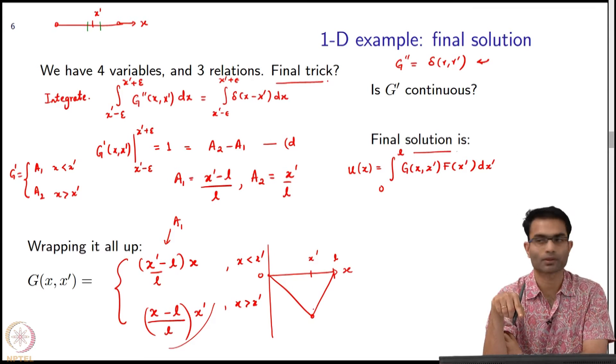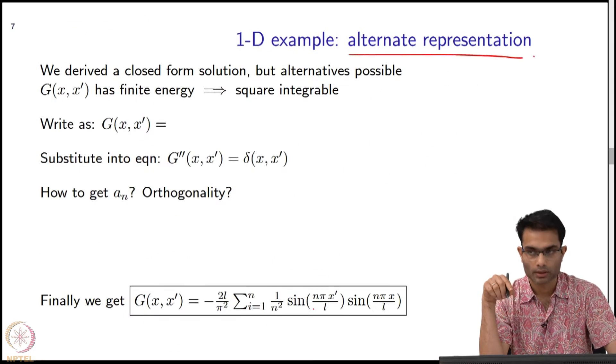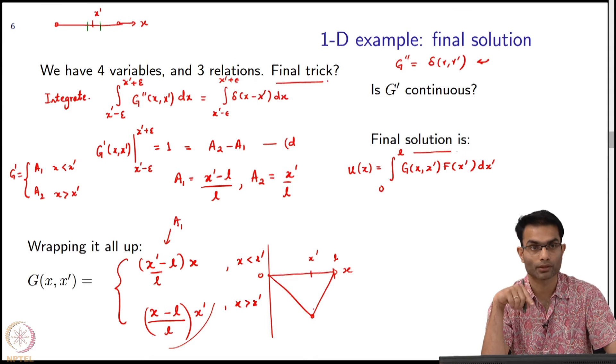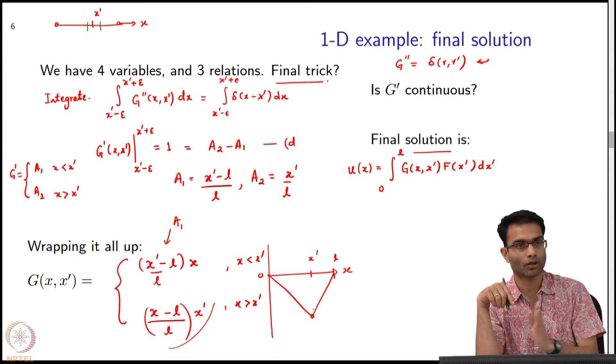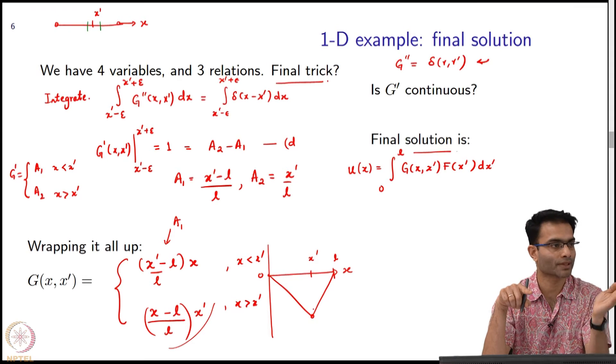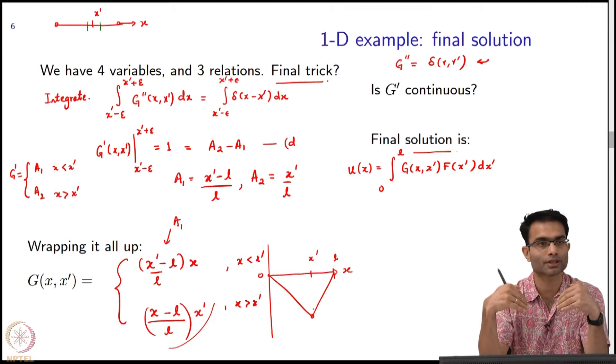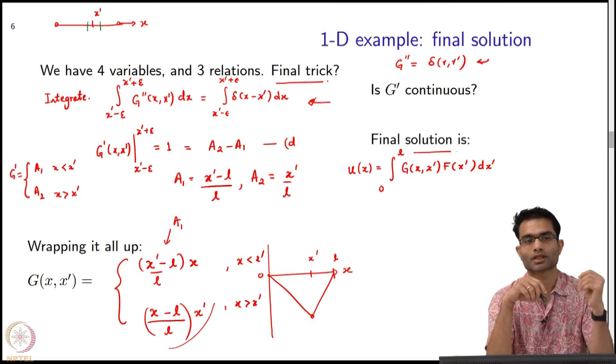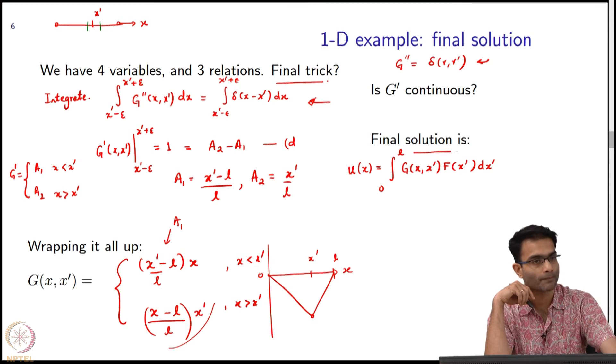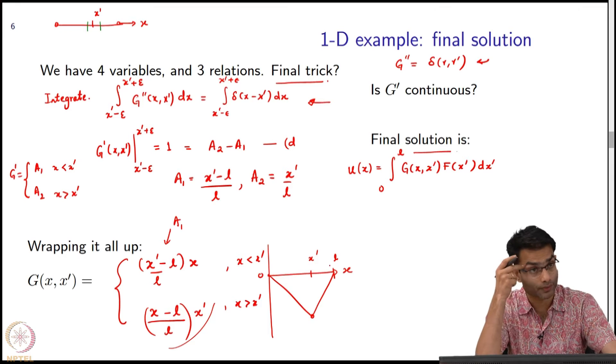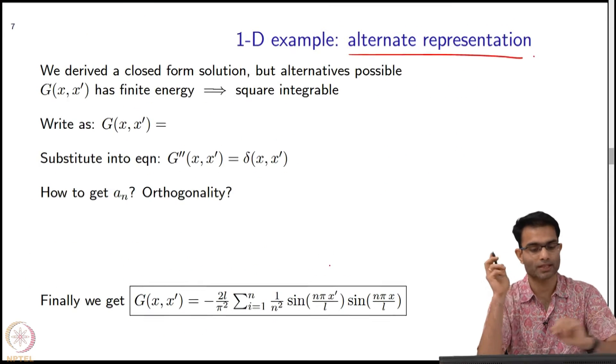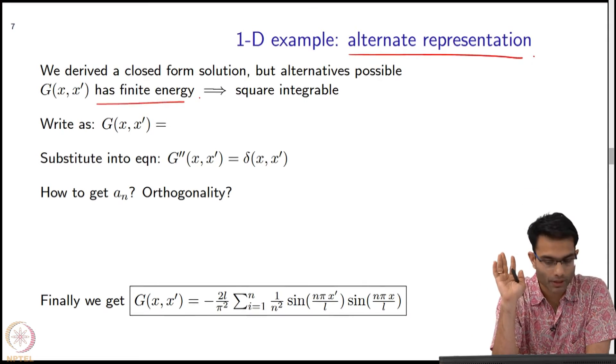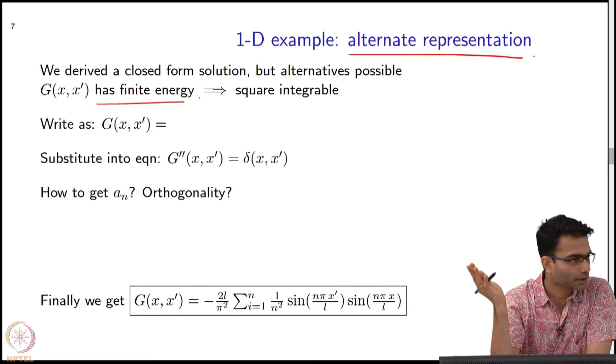This is what you get. I've got a continuous looking function out of this. Does that mean g has a finite value at x equal to x prime? There is no singularity in g. Looking at this solution, it's continuous, so it has finite energy. Finite energy signals are also square integrable.